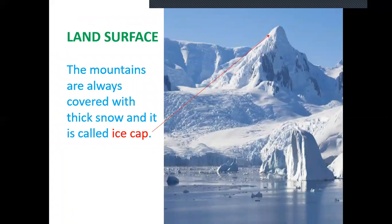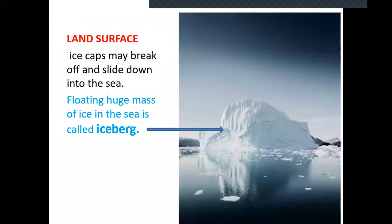The mountains are always covered with thick snow. There is no rainfall, only snowfall. When snow keeps on falling, the size of the mountain will increase and the upper part will break off. The ice caps may break off and slide down into the sea or ocean. The floating huge mass of ice in the sea is called an iceberg.